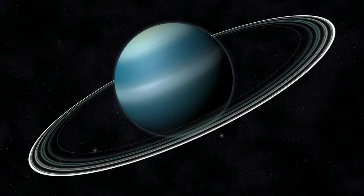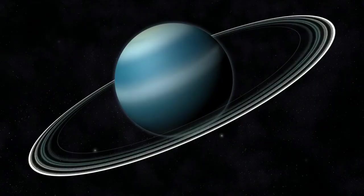Uranus has an impressive 27 known moons, and a faint, barely visible ring system made up of nine continuous and three discontinuous rings.